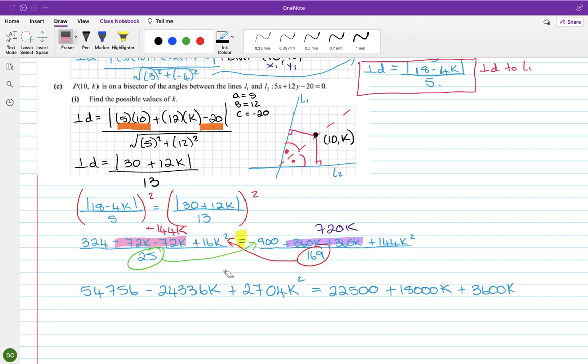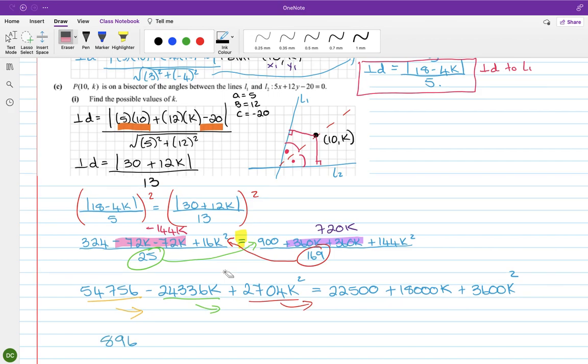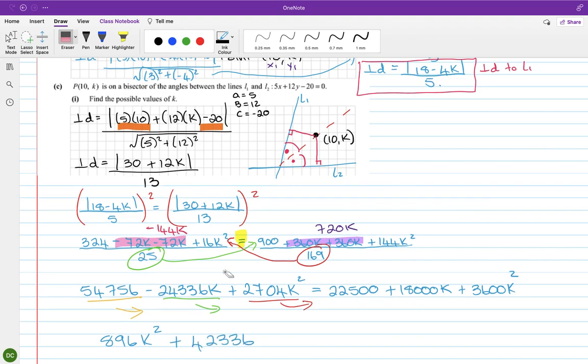Right, I'm going to bring that across. So I have k² first: 3,600, and when I bring that across it's going to be minus 2,704, so that is 896k². Next are the k's: 18,000, and I'm going to bring that across plus 24,336 is 42,336k. And then 22,500, bring that across and make it minus 54,756. Okay, I think I might have jumped a little bit there, but hopefully that made sense. So I brought the red one across and it became minus 2,704, I brought the green one across and it became plus 24,336, and I brought the yellow one across and it became minus 54,756.